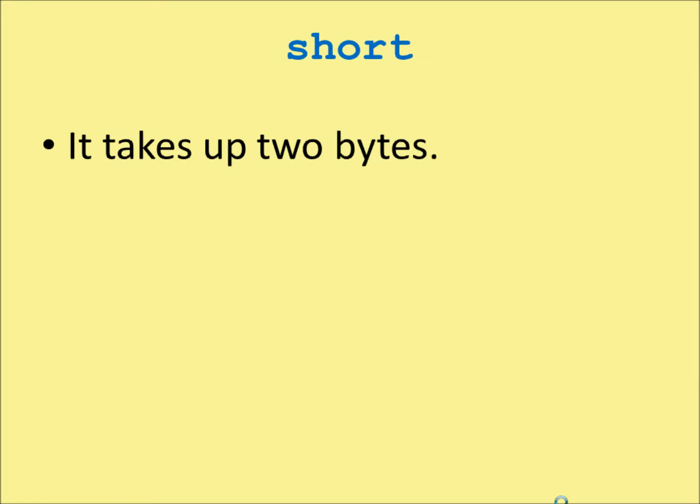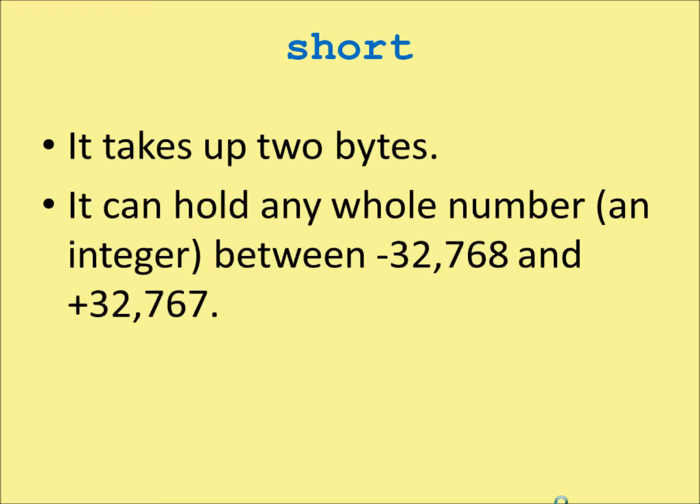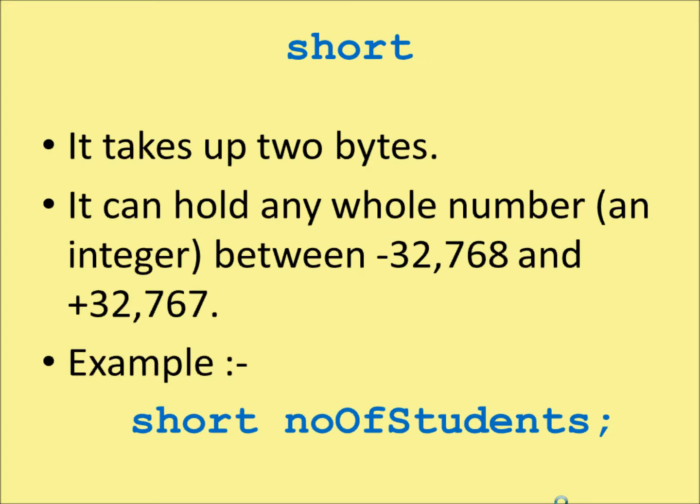Short takes up two bytes, and it can hold a whole number — an integer — between minus 32,768 and plus 32,767. That is declared in the same sort of way. For example: short numberOfStudents. This variable can hold anything between, more or less, minus 32,000 and plus 32,000.